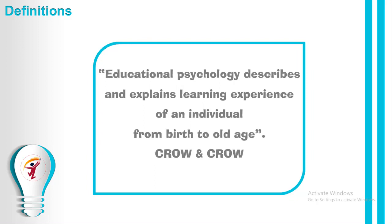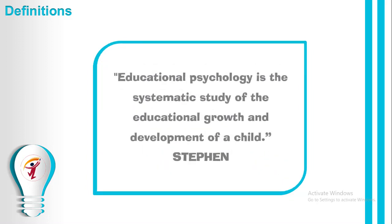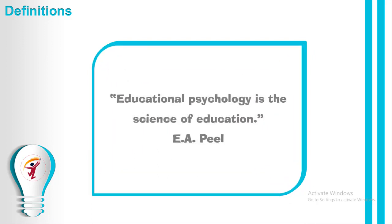Crow and Crow say: 'Educational psychology describes and explains the learning experience of an individual from birth to old age' — because education is a continuous process that never ends. Stephen says: 'Educational psychology is the systematic study of the educational growth and development of a child.' And lastly, E. Appeal says: 'Educational psychology is the science of education' — a very simple and precise definition showing it helps provide and receive education in a scientific way.